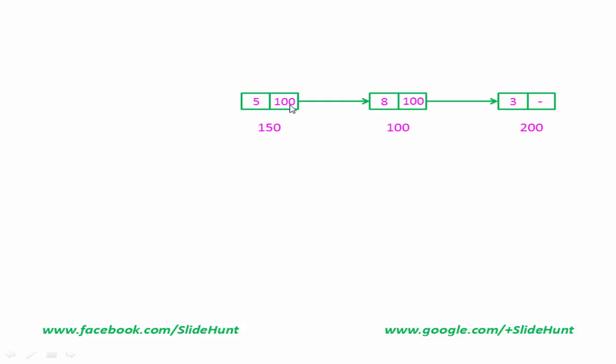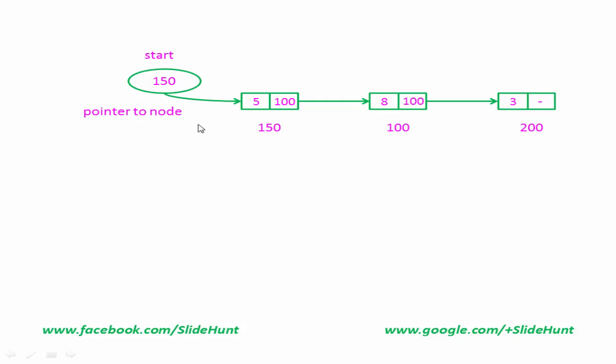Suppose this is a linked list with three nodes. The only information that we know is the address of the first node, or head node. The address of the first node is stored in another variable — let's say 'start' — and the type of that variable is pointer to node. This is the only information that we keep to access the linked list.